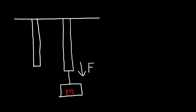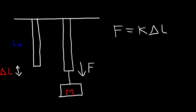Hooke's law states that the force is proportional to the change in length of the solid. The change in length will be the difference between these two points — it's the difference between the original length of the solid, which is L₀, and the new length, or the final length, of the solid. So delta L is L final minus L initial.